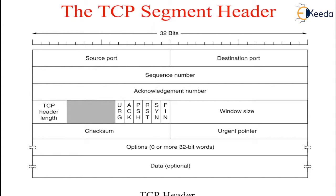Let us discuss the TCP header field by field. The source port and destination port fields identify the local endpoints of the connection. A port plus its host's IP address forms a 48-bit unique endpoint. The source and destination endpoints together identify the connection.